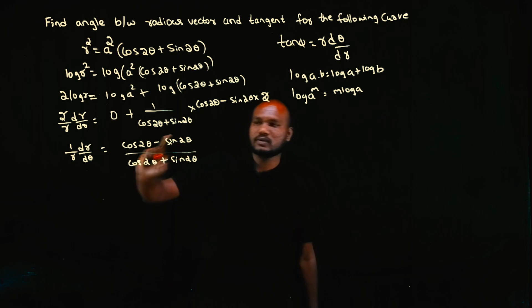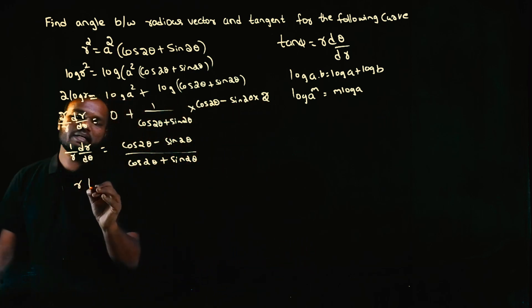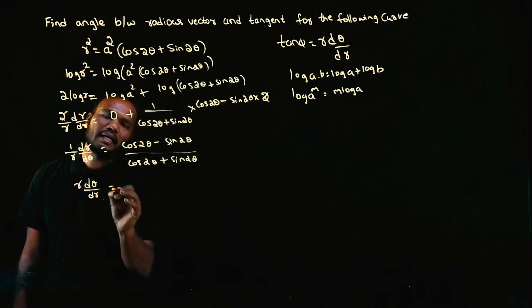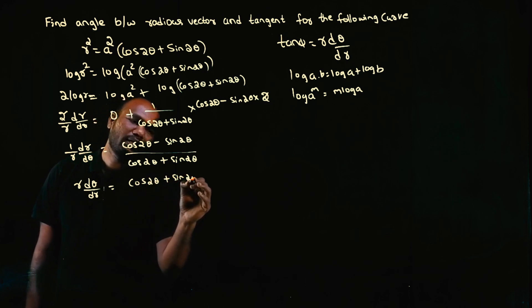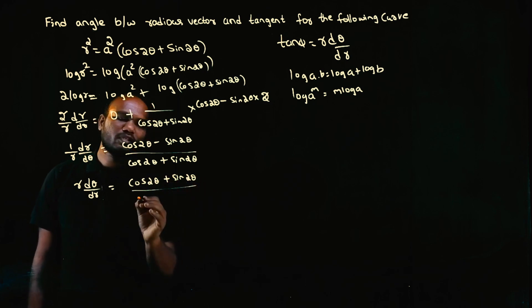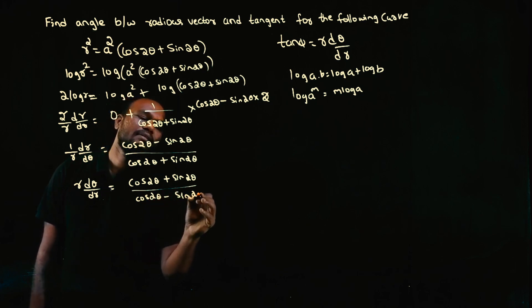I'm not interested in 1/r, I'm interested in r. So just flip it. r dθ/dr equals (cos2θ + sin2θ) divided by (cos2θ - sin2θ).